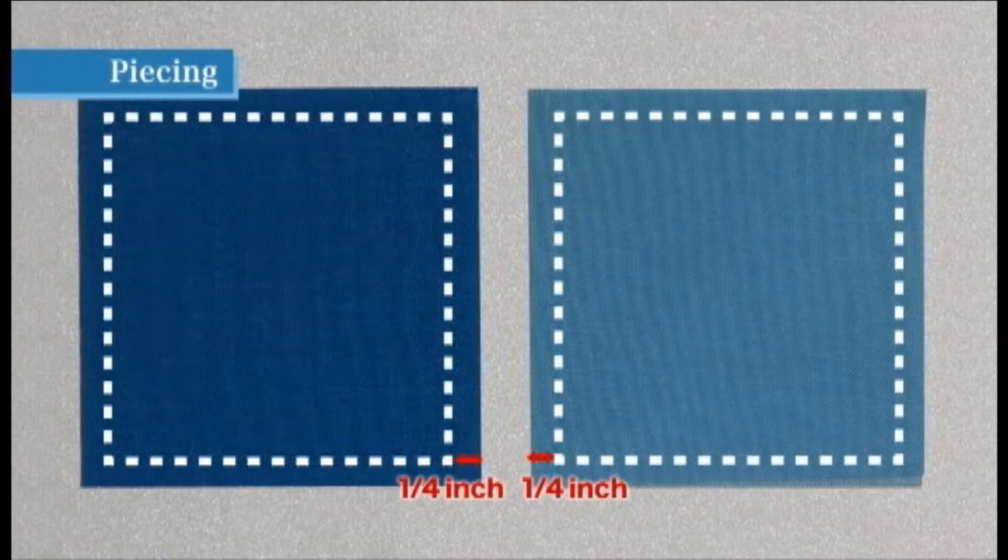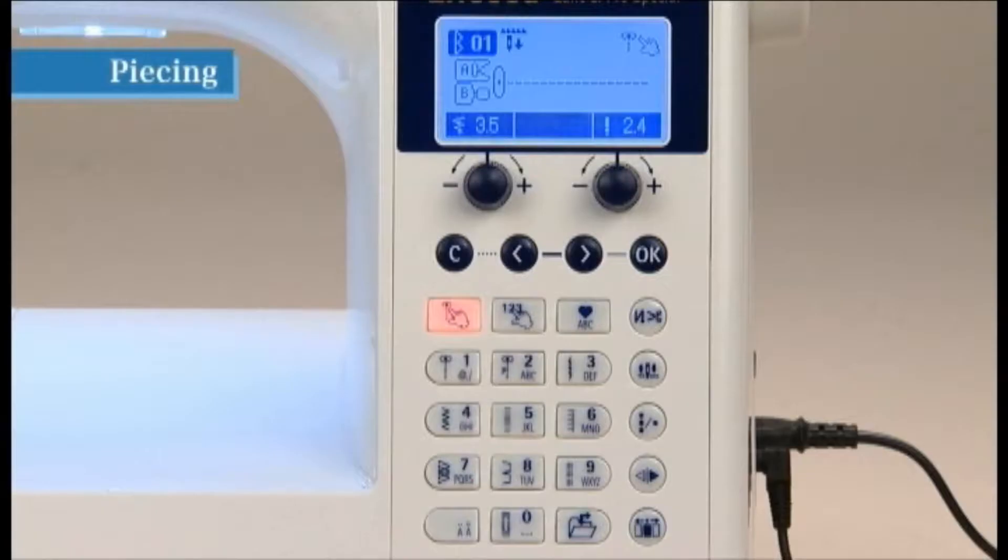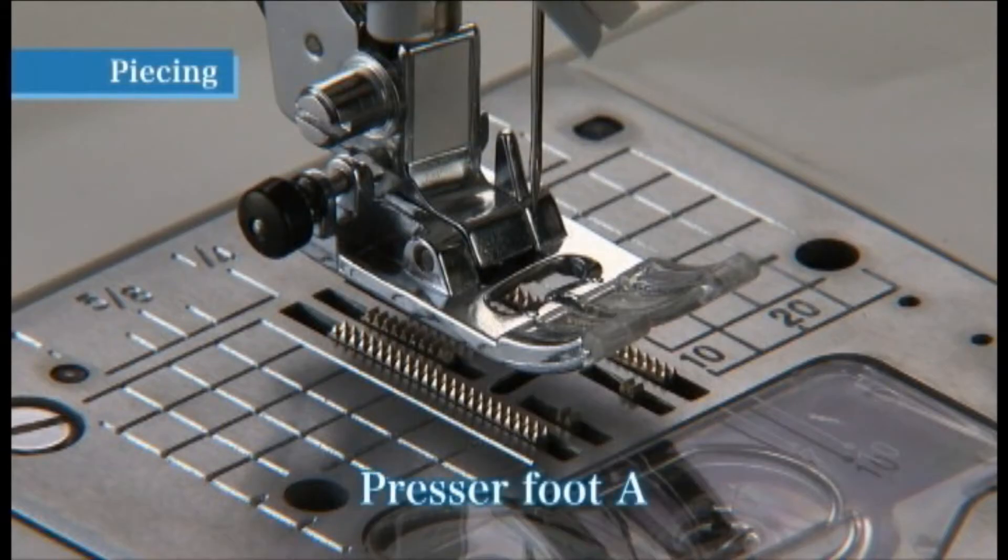First, cut the fabric to sizes that account for a seam allowance of quarter an inch. Select direct pattern number two. Use the presser foot A.